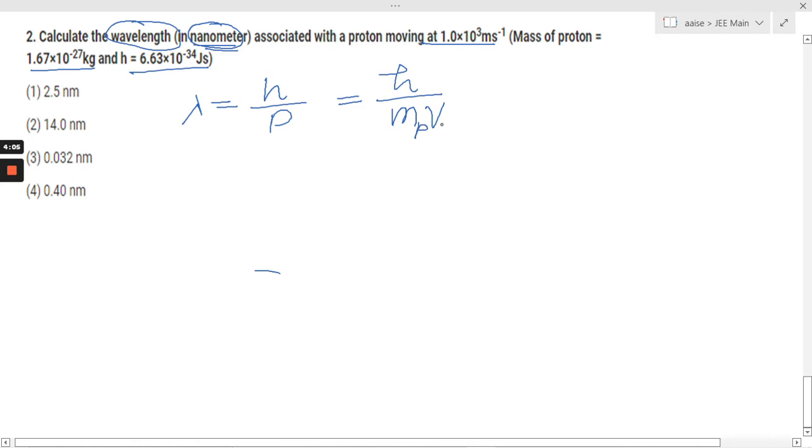here m is the mass of proton and v is the velocity of proton. We have each and every value, so what we are going to do is just put the values in.